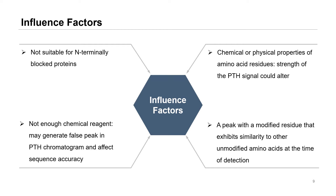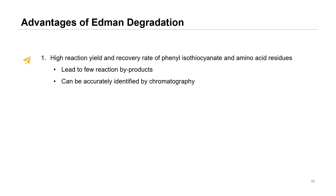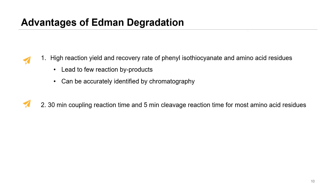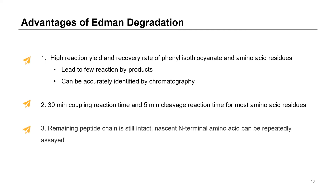Edman degradation has the following advantages. First, the reaction yield and recovery rate of phenylisothiocyanate with all amino acid residuals are quite high, so reaction byproducts are few and can be accurately identified by chromatography. Second, for most amino acid residuals, a 30-minute coupling reaction time and a 5-minute cleavage reaction time are sufficient. Third, the remaining peptide chain is still intact and the nascent N-terminal amino acid can be repeatedly assayed. The chemistry described by Edman over 50 years ago remains the gold standard for identifying protein termini, though limitations in coverage, speed, and versatility have prompted research for alternative methods.